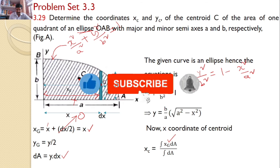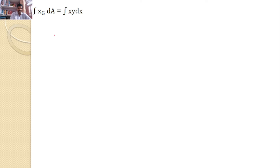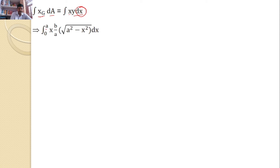Let us calculate the numerator first. ∫XG dA = ∫X · Y · DX. The X limits vary from 0 to A, so this becomes ∫₀ᴬ X · (B/A) · √(A² − X²) · DX, substituting the ellipse equation Y = (B/A) · √(A² − X²).